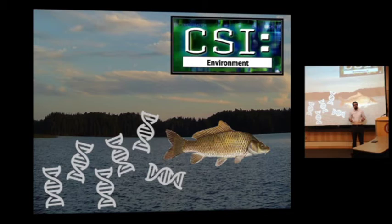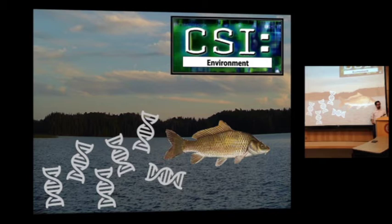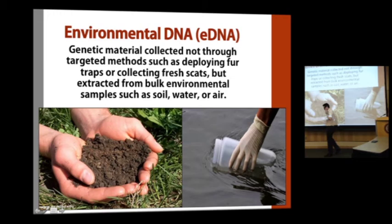Like your favorite crime show — instead of swabbing a cigarette butt at a crime scene and looking for the criminal's DNA, we can go out and look for the invasive species, or maybe an endangered species or some other species of interest in our landscape, by looking for its genetic material. We call this environmental DNA — the genetic material that organisms are sloughing off into their environment.